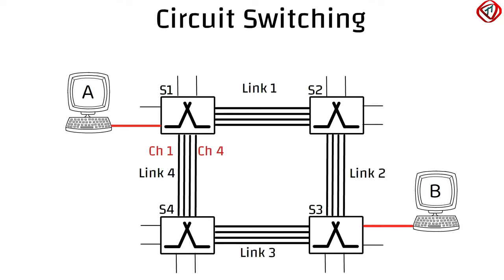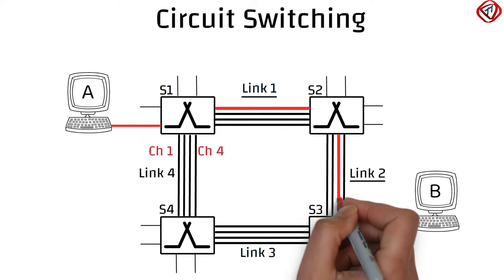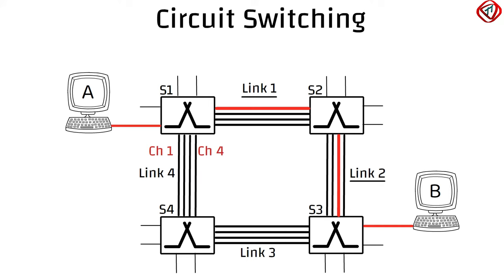If host A wants to communicate with host B, the network first reserves a channel in the first and second link. Say, channel 1 in link 1 and channel 2 in link 2. The combination of channels is called a circuit.